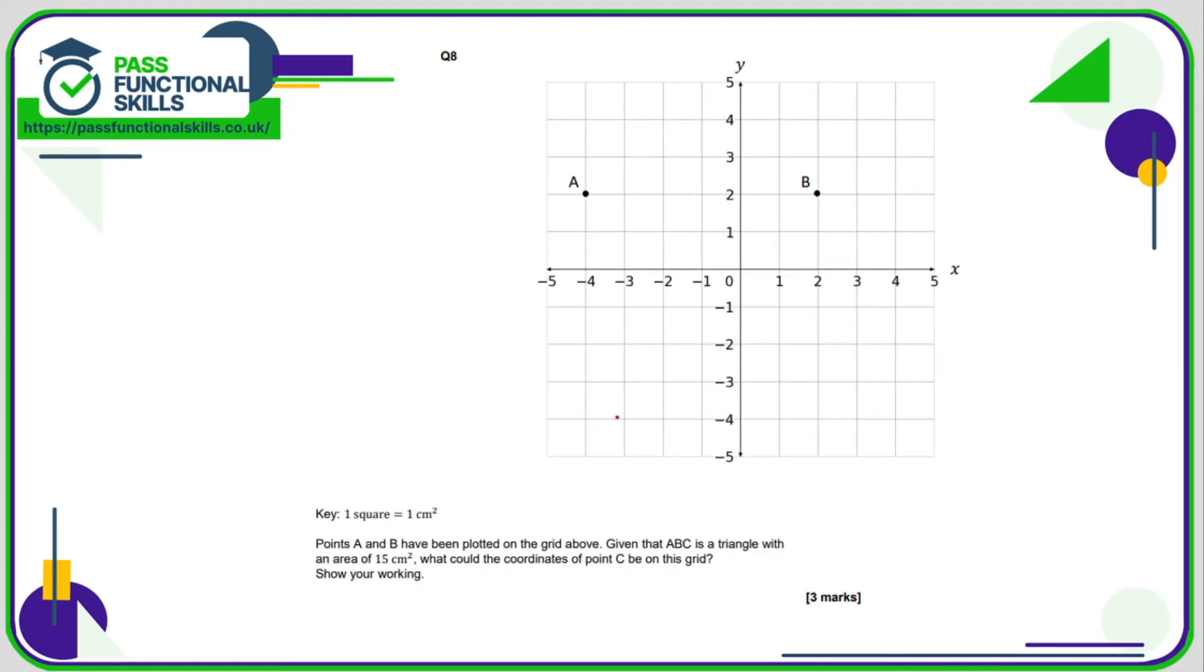And the final question. We are trying to work out a triangle that has, we're trying to draw a triangle which has an area of 15 centimeters squared. Now the formula for the area of a triangle is base times height divided by two. So if we assume that this is going to be the base, so one, two, three, four, five, six, six times something divided by two needs to equal 15. So what we could do here is move this division by two over to the other side. So six multiplied by the height equals 15 times two. 15 times two is 30. So six times the height equals 30. Six times what equals 30?